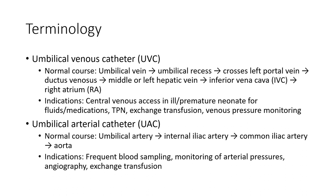Umbilical arterial catheter (UAC) normal course: umbilical artery, internal iliac artery, common iliac artery, and aorta. Indications include frequent blood sampling, monitoring of arterial pressure, angiography, and exchange transfusion.